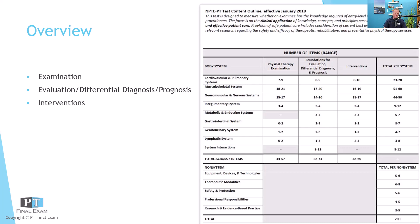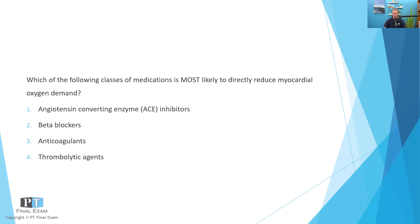So without further ado, let's dive into our practice question for today, which is related to the cardiovascular and pulmonary system. Which of the following classes of medications is most likely to directly reduce myocardial oxygen demand? Number one: angiotensin converting enzyme inhibitors, or ACE inhibitors. Number two: beta blockers. Number three: anticoagulants. Number four: thrombolytic agents.